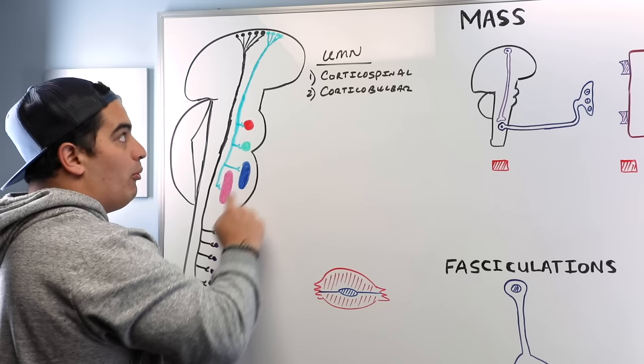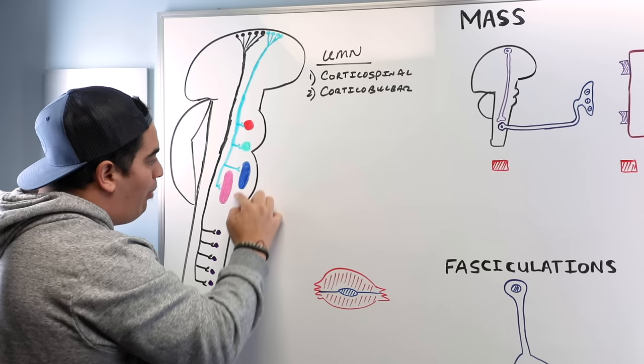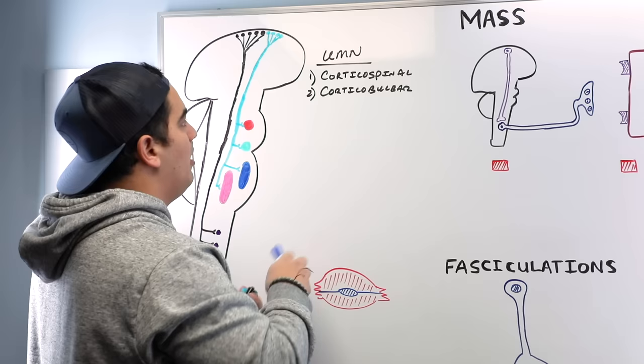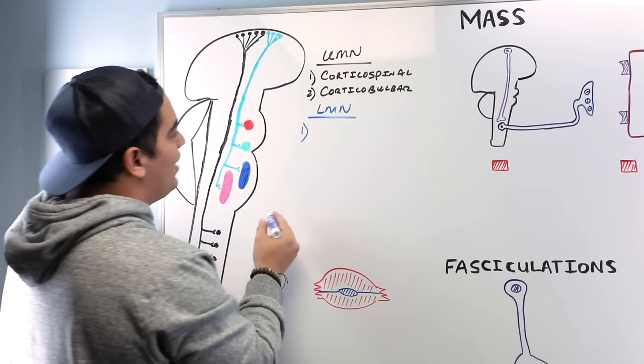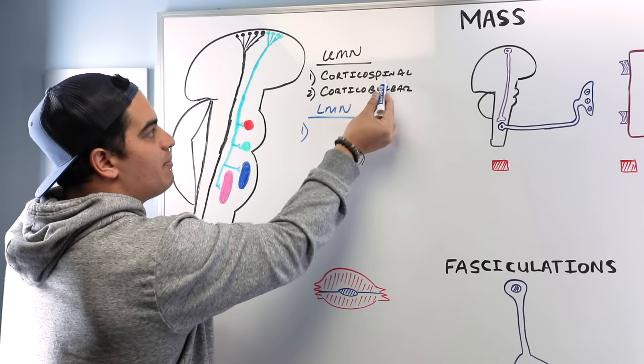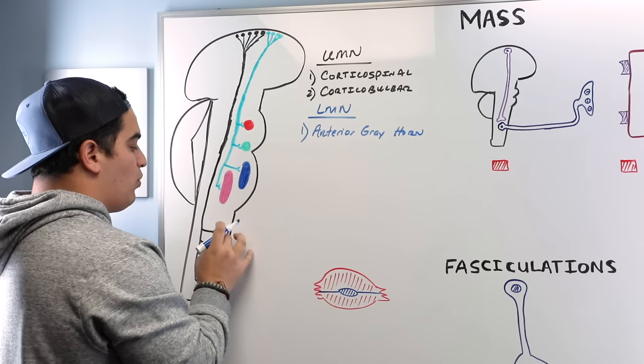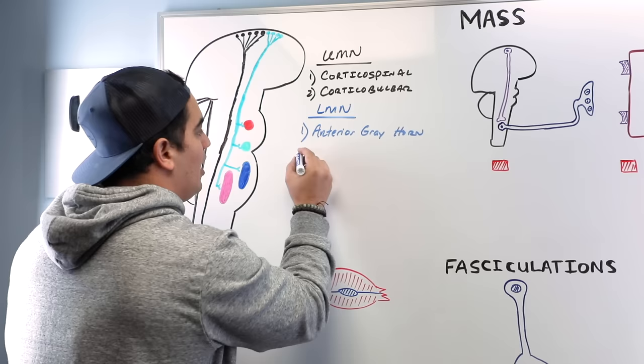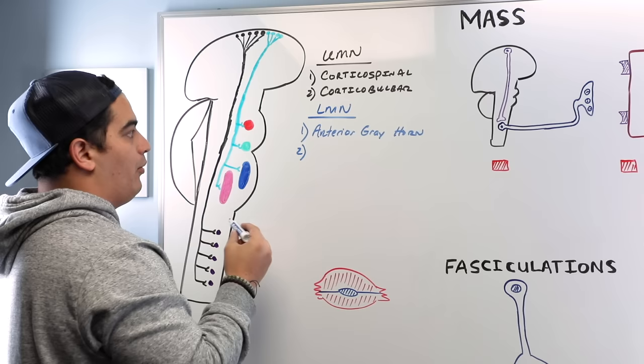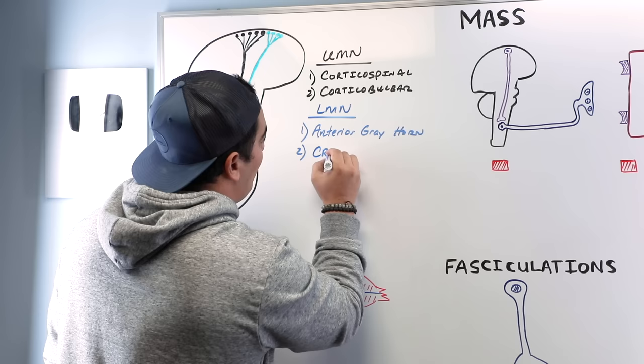Lower motor neurons are the destination or endpoints of these upper motor neuron tracts. For the corticospinal tract, the lower motor neurons are the cells in the anterior gray horn of the spinal cord. From the anterior gray horn, these neurons give off axons that travel out to skeletal muscles. For the corticobulbar tract, the lower motor neurons are specific cranial nerve nuclei in the brainstem.